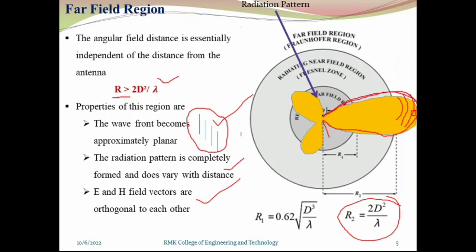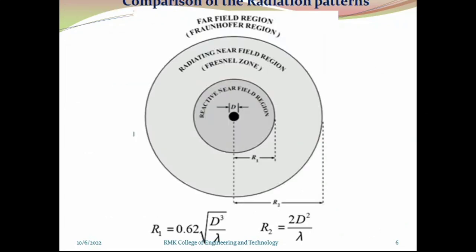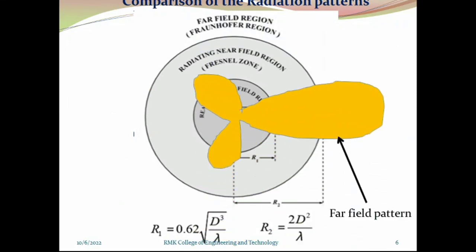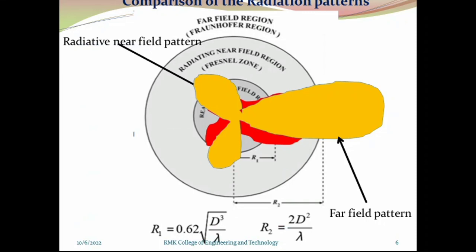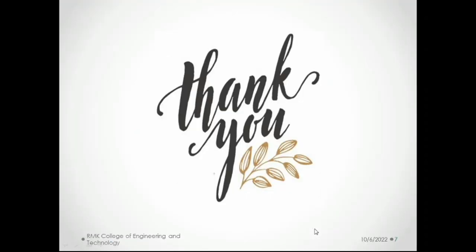This is the complete formation of radiation field components of the particular antenna system. This is the far field pattern, this is the radiating near field pattern, and this is the reactive near field pattern. We always keep our measurement systems in the far field region. The minimum distance requirement is R2 = 2D²/lambda — that is very important. With this, we will wind up today's session.